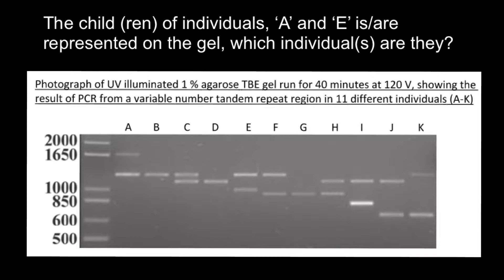First of all, let's circle the genotype of individual A, which is here, and individual E, which is here. As you can see, both individual A and E have two alleles of different sizes. Here we do not mean alleles that code for proteins, because such alleles would be of the same size.